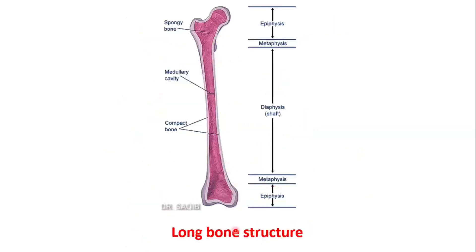Let's recapitulate the long bone structure. This is the femur, and this is the upper and the lower end and the shaft upper end. This part is the epiphysis. And this is the metaphysis, and this is the diaphysis of the shaft. For the lower end, this is the metaphysis — the junction of the diaphysis and the epiphysis — and this is the epiphysis.